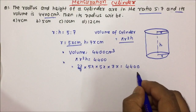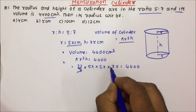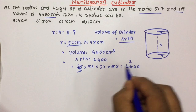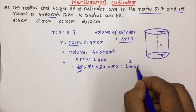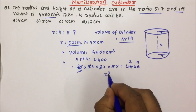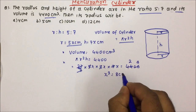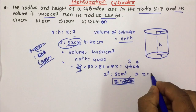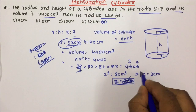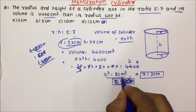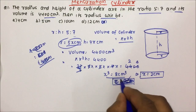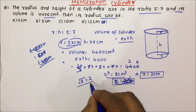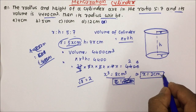Now we have to simplify this. So 7 and 7 will cancel out, and 22 will divide this by 2 times, and 5 into 5 will divide this by 4 times. So x cube will be equal to 8 centimeter cube. The value of x will become equal to 2 centimeter, because if x cube equals 8 centimeter cube, then the cube root of 8 is 2 — since 2 cube is 8. So x equals 2 centimeter.